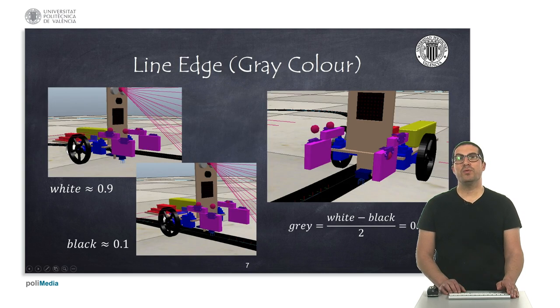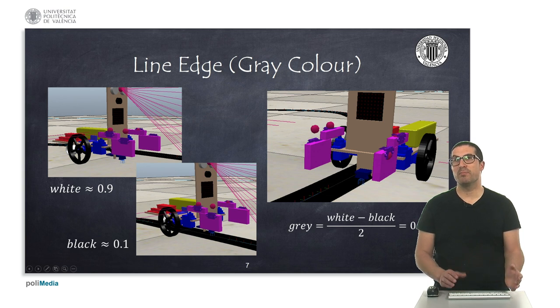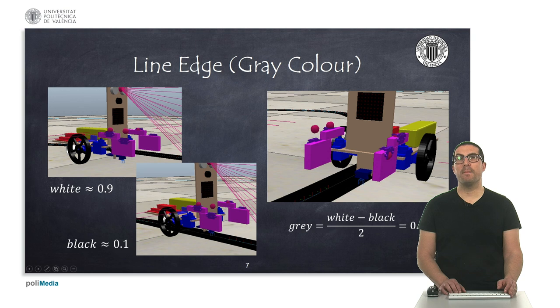So, if you print the value you obtain with the vision sensor on the console using just the print instruction, you will see that the sensor, whenever it's pointing to the black line, it will return a value approximately of 0.1.